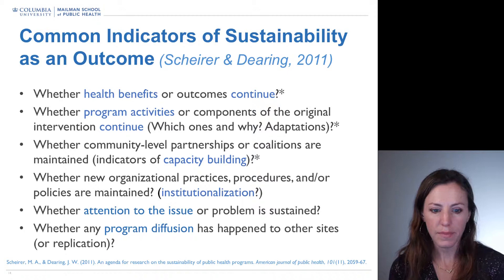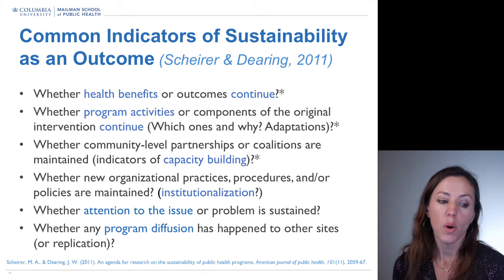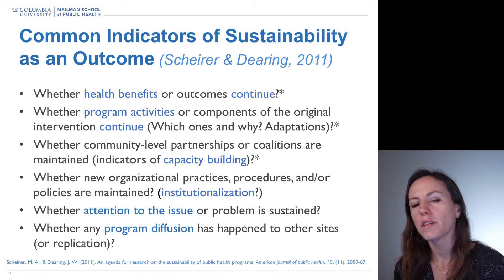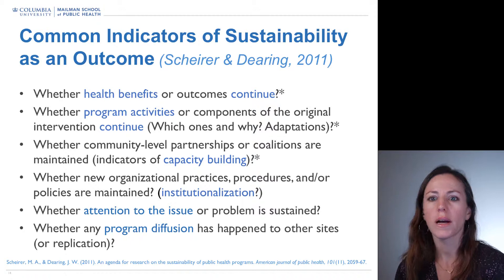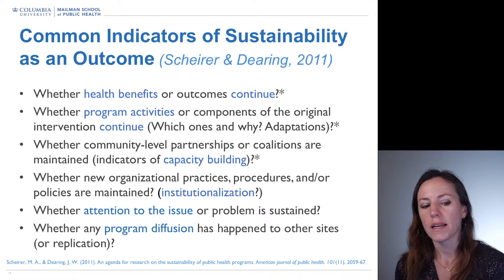Marianne Shire and Jim Deering also talk about a couple other ways you can think about measurement of sustainability as an outcome. One is institutionalization - whether new organizational practices, procedures, and policies are maintained. In general, there's been a move away from thinking about sustainability as this routinized, static kind of end-game that would need to be maintained in a certain way in order to count. Given the dynamic nature of sustainability, there's been less emphasis on that.